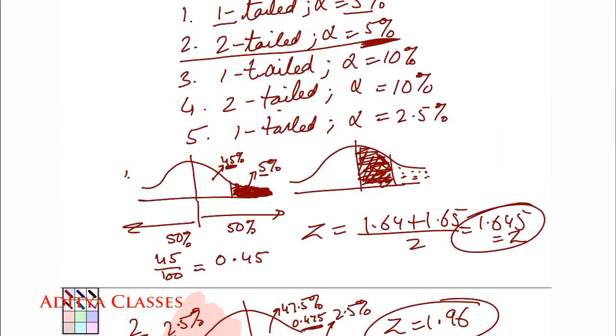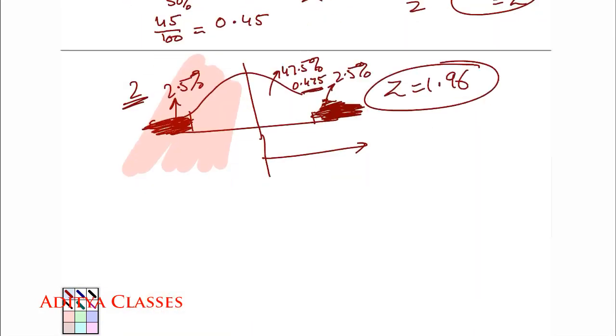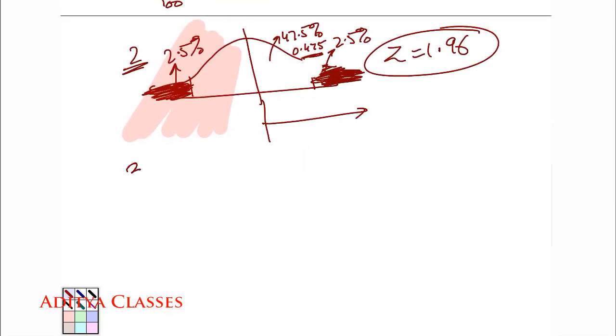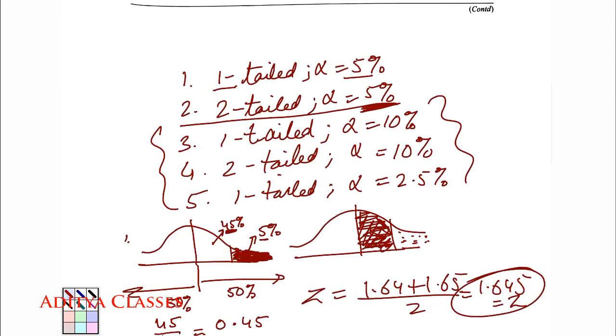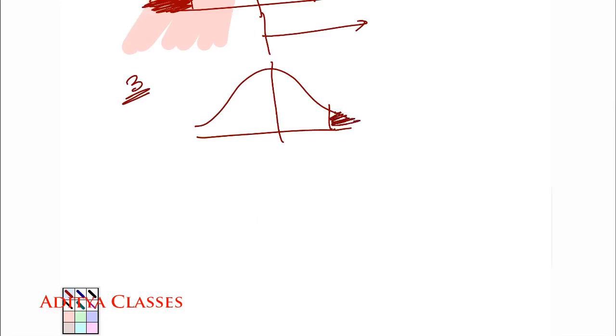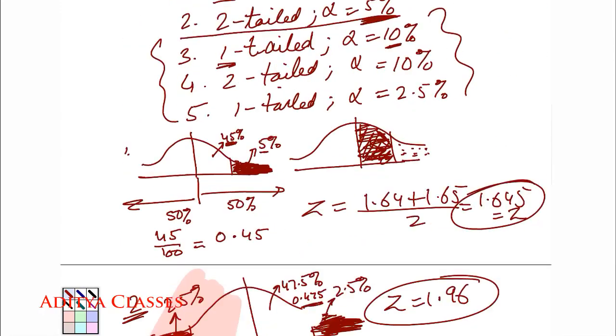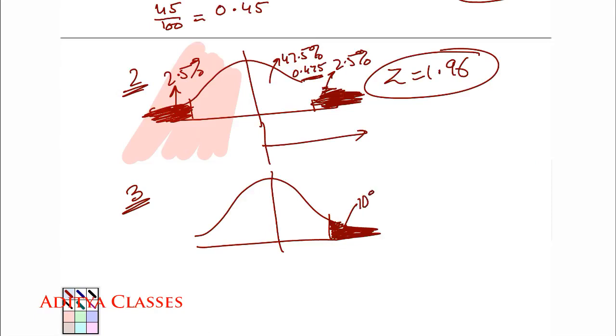If you have not understood, no issues, by the time we solve these 3 values, you will definitely understand it. Now let us go ahead with the third question. What is that third question? Third question is 1 tailed 10%, 1 tailed 10%. So I very well know that there will be only one tail, all the rejection is in one tail. And how much is that rejection or alpha, 10%. So this will be 10%, but remember I am not interested in this, I am interested in how much is this? This will be 40%, remember this is 50%, so if this is 10, this has to be 40, 40% or we can write it as 0.40.